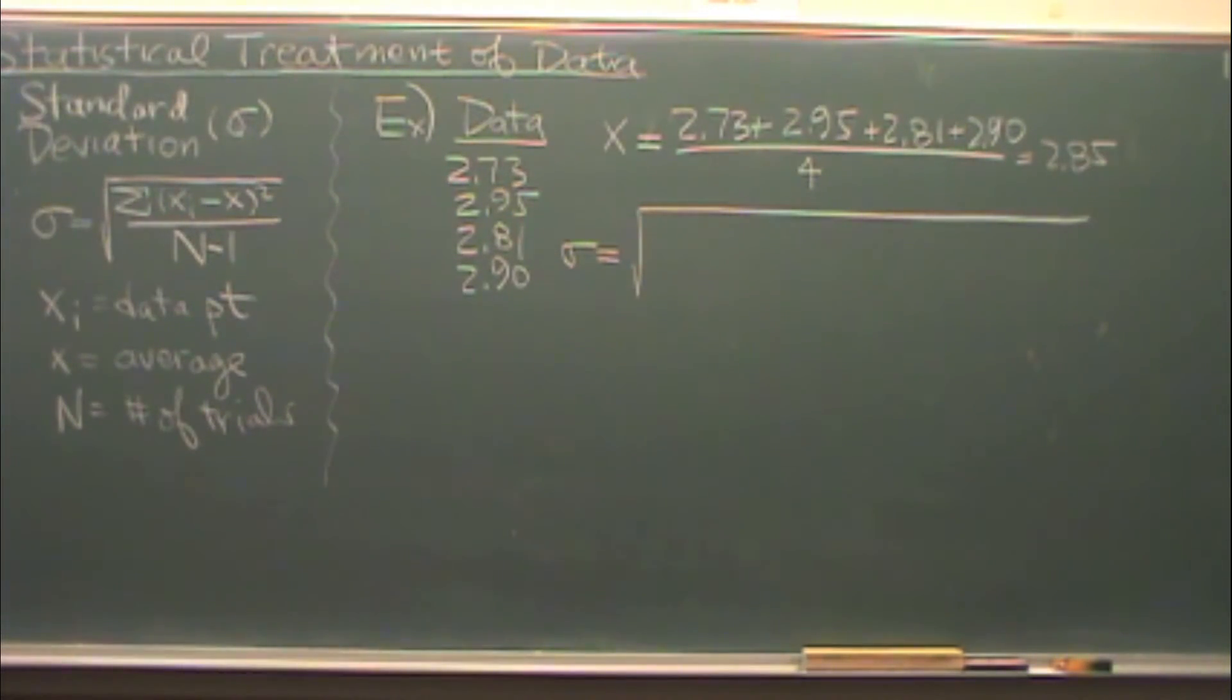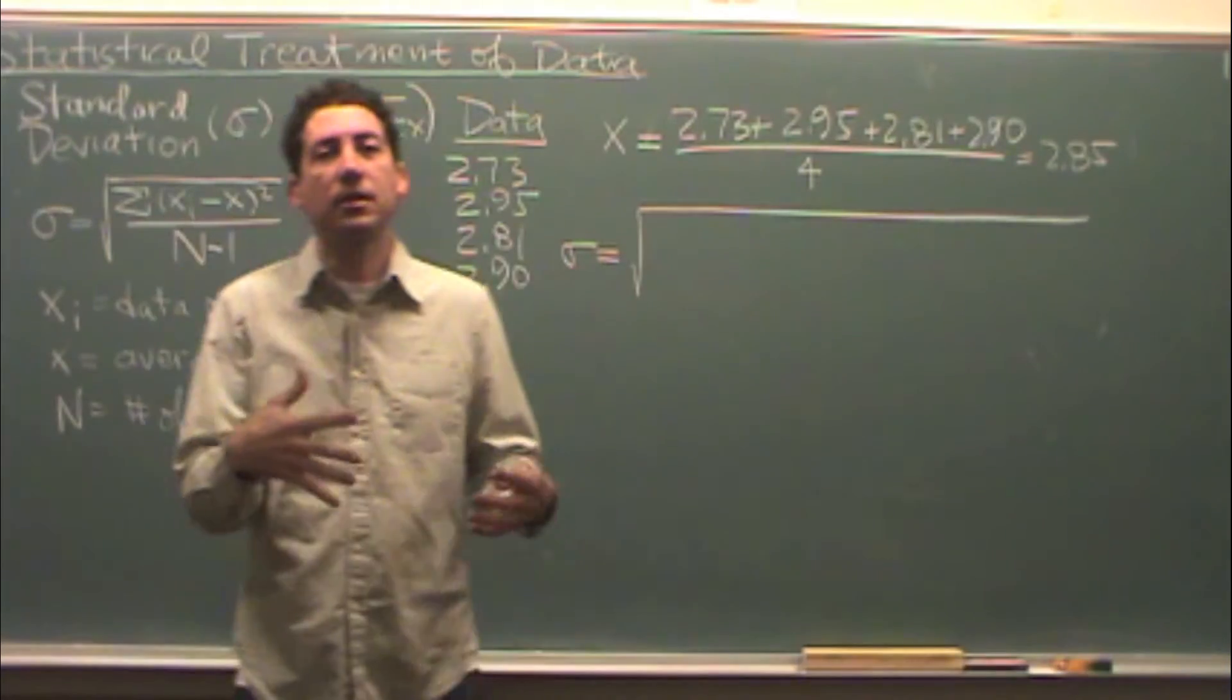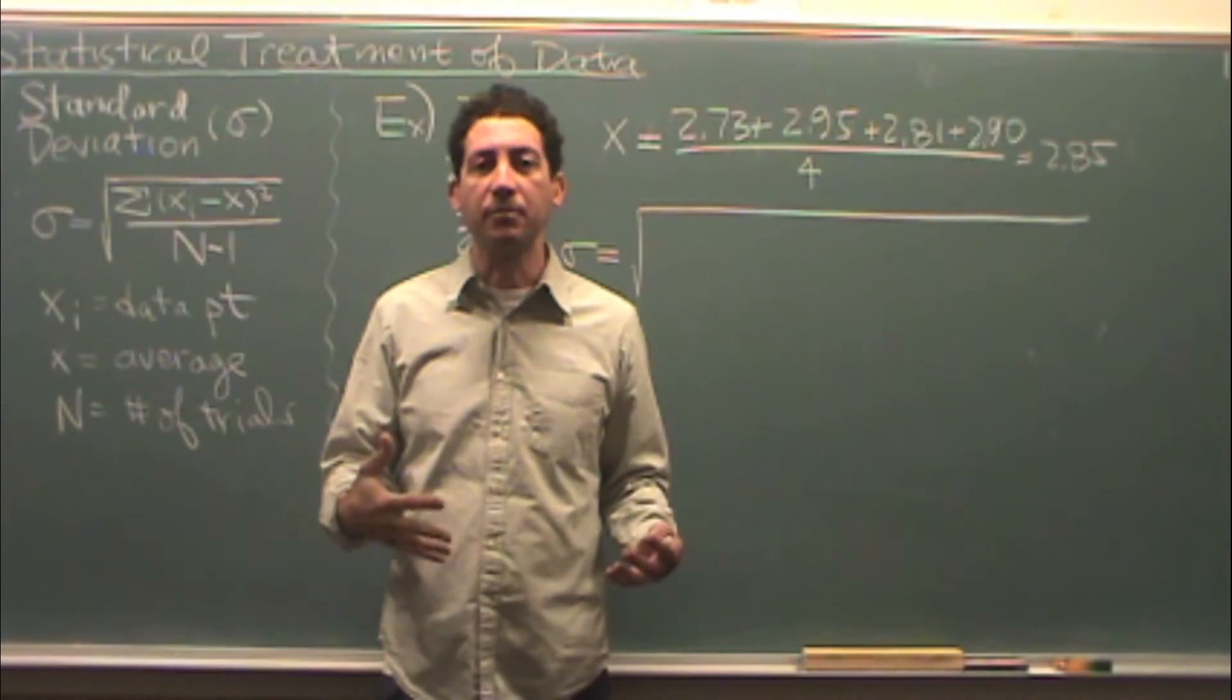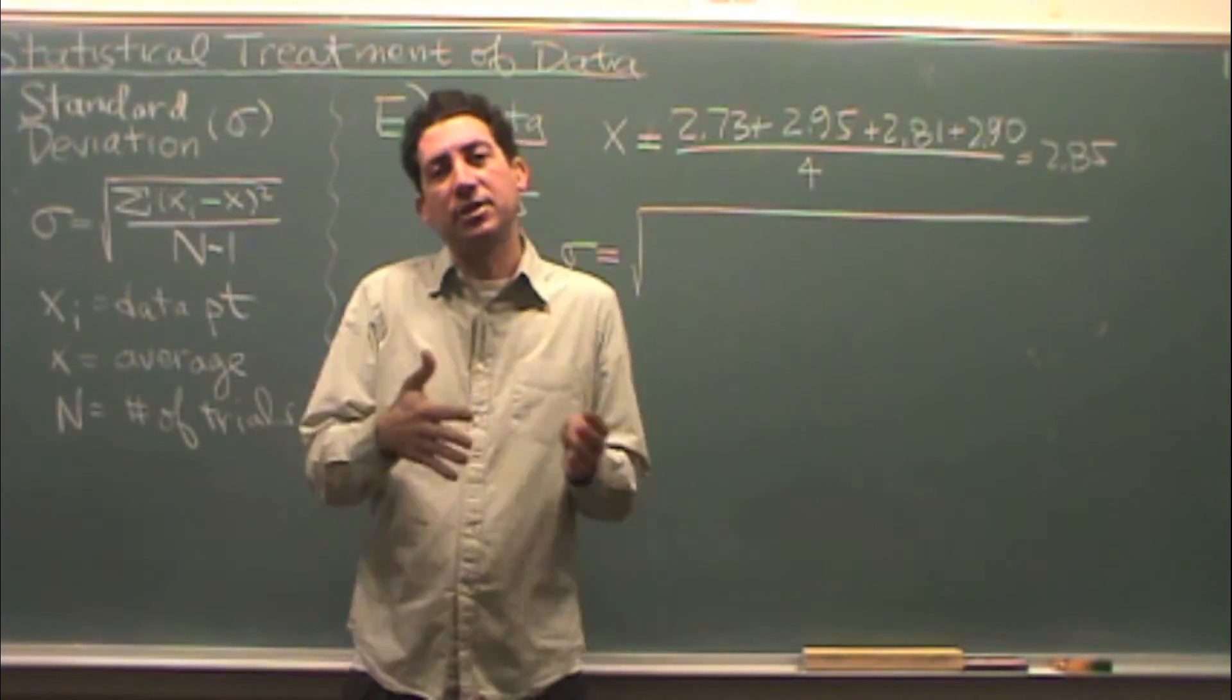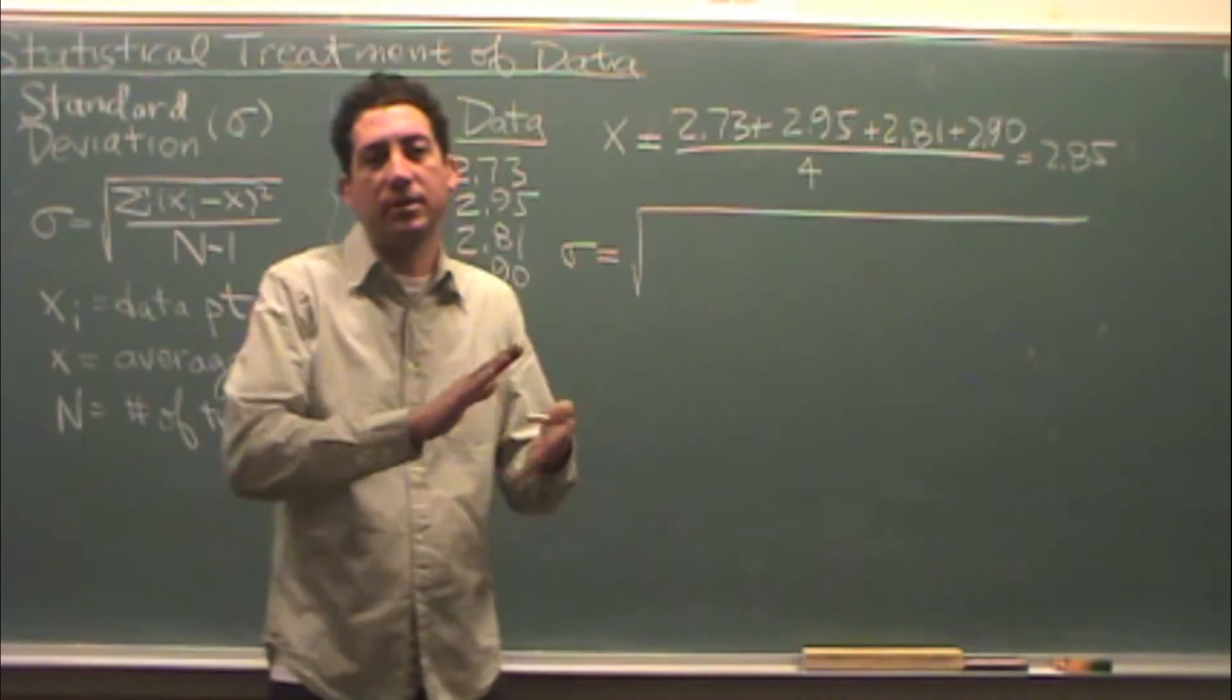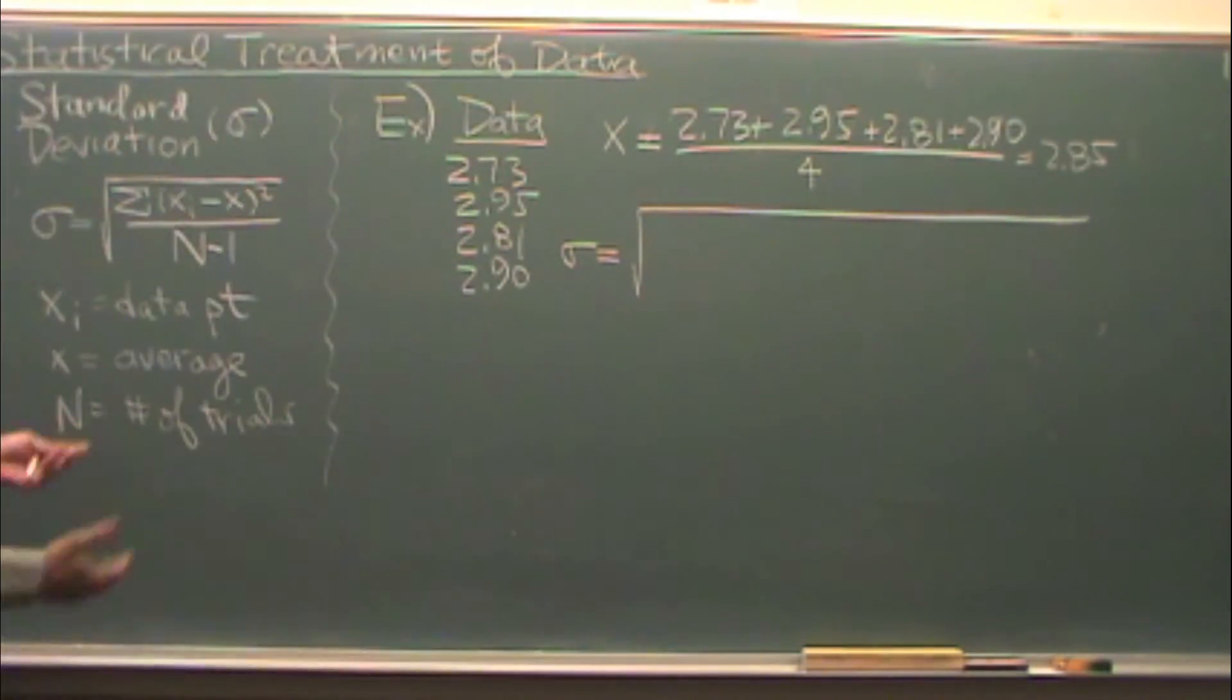Standard deviation essentially shows you how well clustered your data is around the mean. So the smaller the standard deviation, the more that your data is precisely around the mean. Here's how you calculate it.